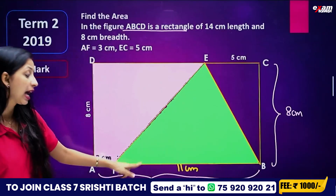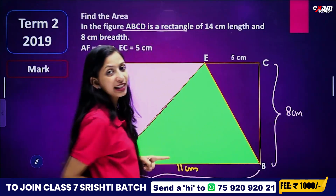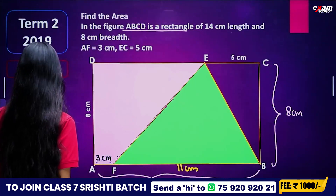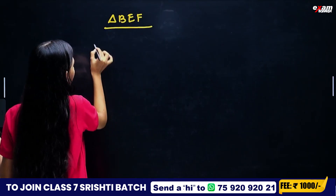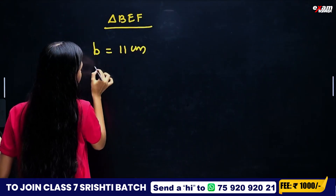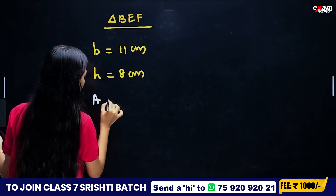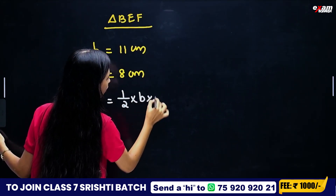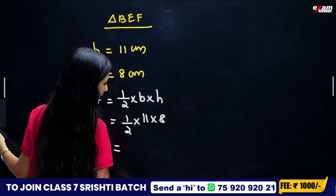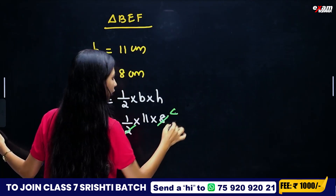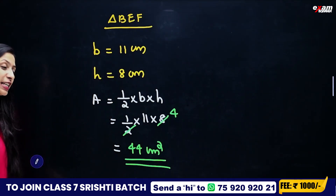BF is 11 cm and the height of the rectangle is 8 cm. We consider triangle BEF with base 11 cm and height 8 cm. Area is equal to half into base into height, which is half into 11 into 8. 8 divided by 2 is 4, so 4 into 11 equals 44 cm².